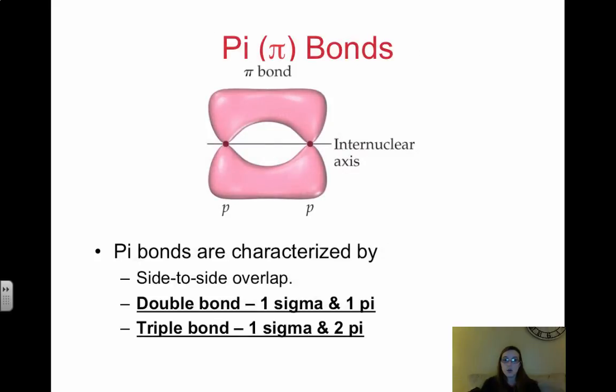And then we have pi bonds. So pi bonds are characterized by side-to-side overlap. So instead of having head-to-head, we now have side-to-side. So with pi bonds, if we have a double bond, we have one sigma and one pi bond. If we have a triple bond, we have one sigma and two pi bonds. So pi bonds only happen when we have multiple bonds, and you always have to have one sigma bond within that. So then a double is one sigma, one pi, a triple is one sigma and two pi bonds.